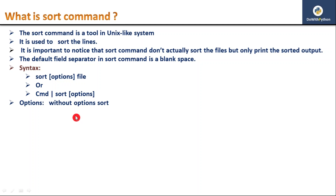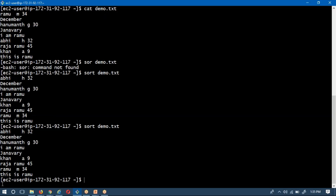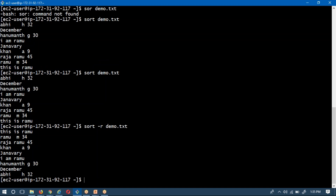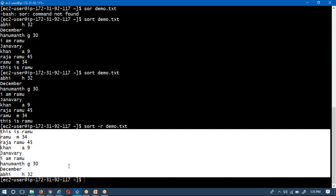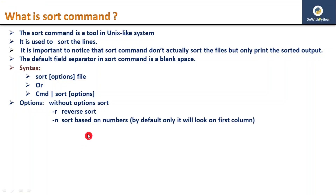Now what are the different options? Without options, we already saw how sort works. One option is hyphen r, which reverses the sort. If you do sort without any options you get alphabetical order; to make that reverse from Z to A, just use the hyphen r option. Observe that the output is now reversed.